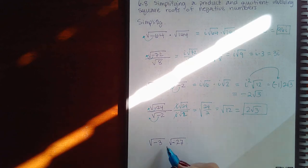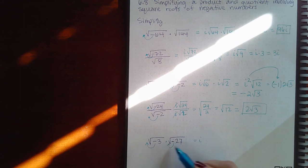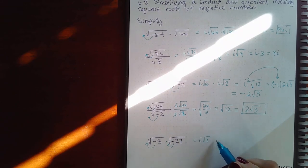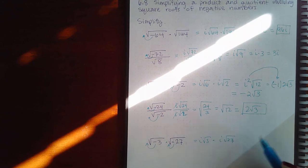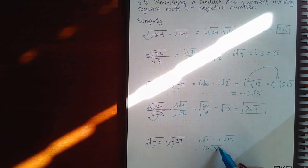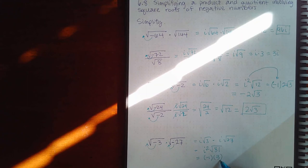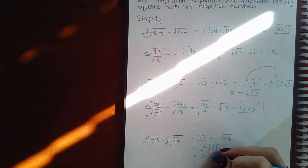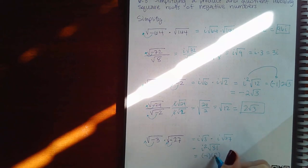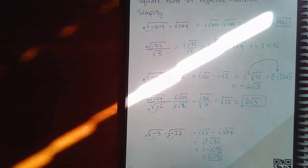For this last one, there's no dot shown but you can assume multiplication. I take out the i from the first radical and i from the second radical. The two i's multiplied together make i². The two radicals — now without negatives inside — multiply to give √81. Since i² = −1 and √81 = 9, we get −1 times 9, so the final answer is negative 9.